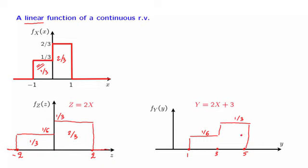So the story is entirely similar to what happened in the discrete case. We start with a PDF of x, stretch it horizontally by a factor of 2, and then shift it horizontally by 3. The only difference is that here, in the continuous case, we also need to scale the plot in the vertical dimension — specifically, make it smaller by a factor of 2 — and this needs to be done in order to keep the total area under the PDF equal to 1.